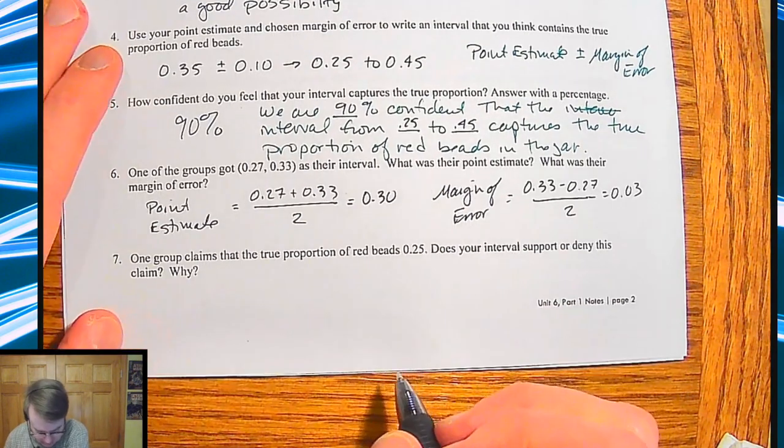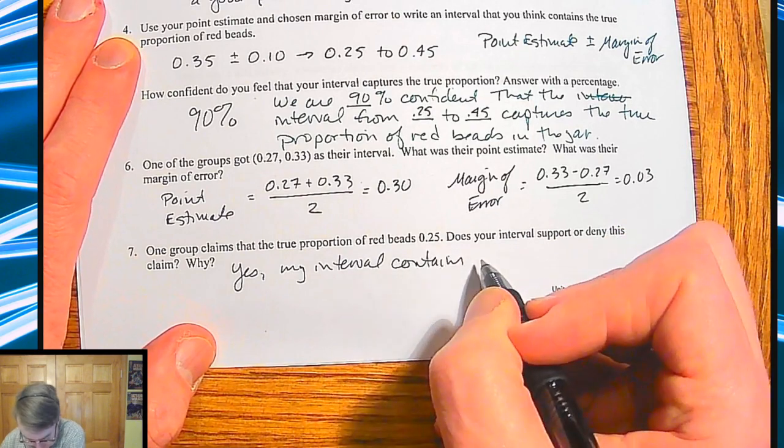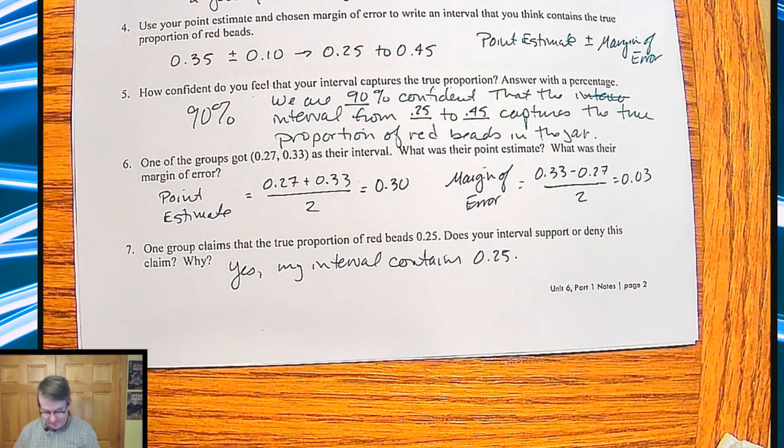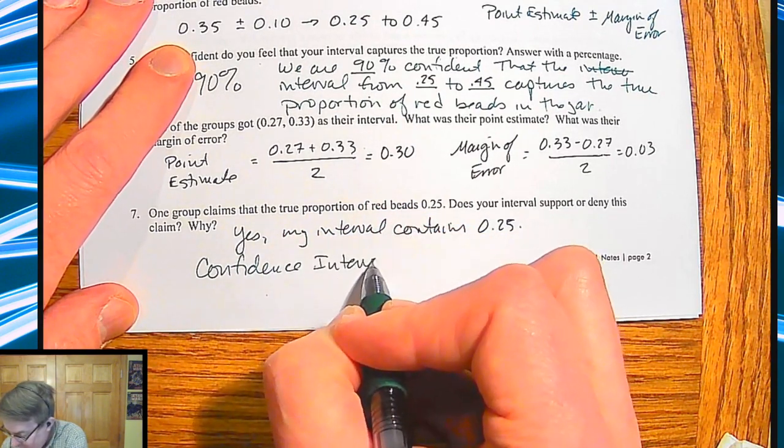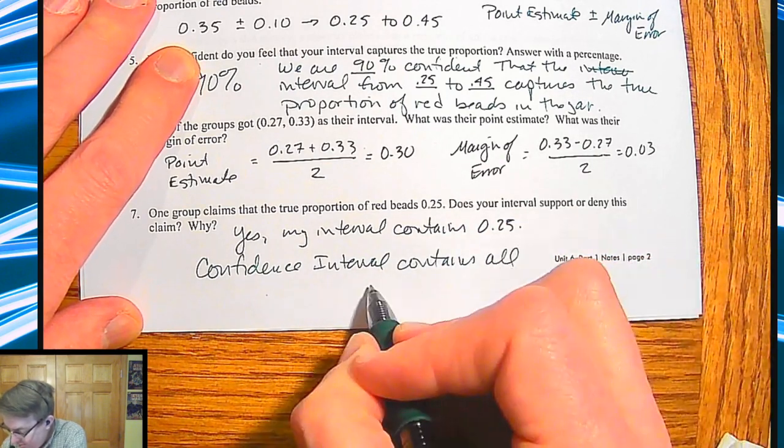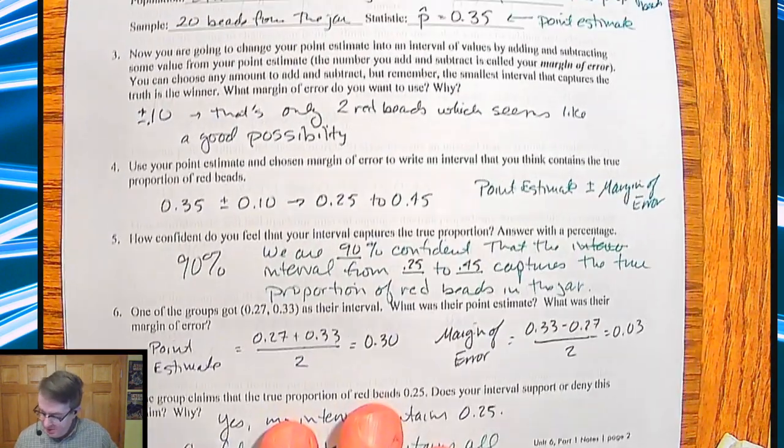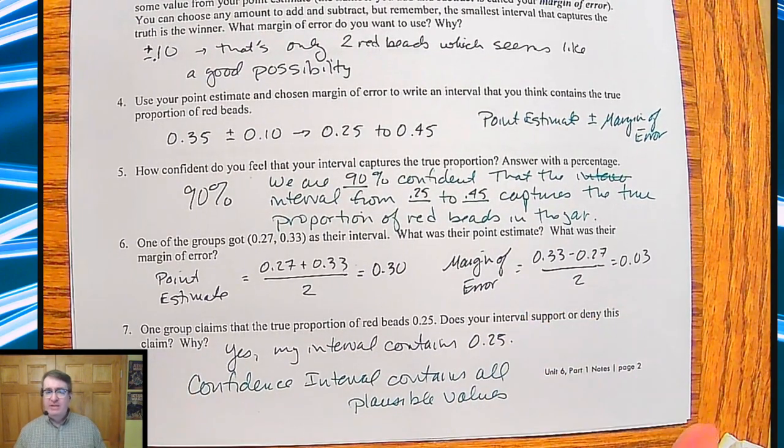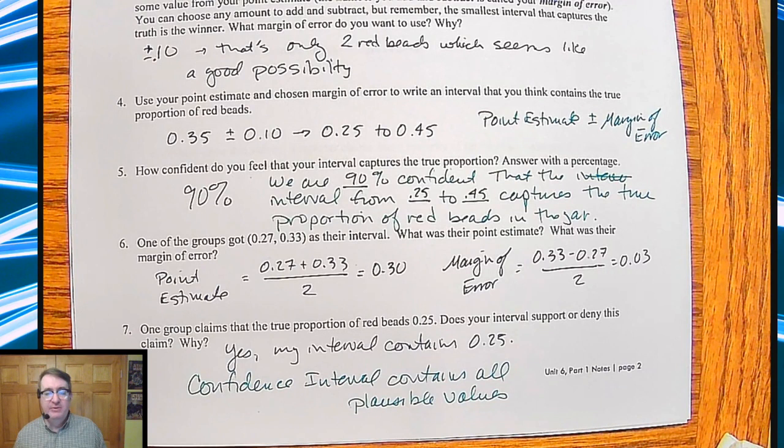But we'll kind of play around with it a little bit more as we go. So for us, yes, my interval contains 0.25. So confidence interval contains all plausible values. Which values make sense for what we're seeing. For example, especially after we get a lot more samples in here, let's say everybody's getting anywhere between 20 and 40. That means that having a confidence interval that goes all the way up to 55 isn't going to be plausible. It doesn't make sense. And so we're going to formalize this more as we go. But for now, I think you have just a nice little taste of what confidence intervals are. So I'm going to close this one out. We're going to go formalize everything here in a second. We'll talk to you soon. Bye.